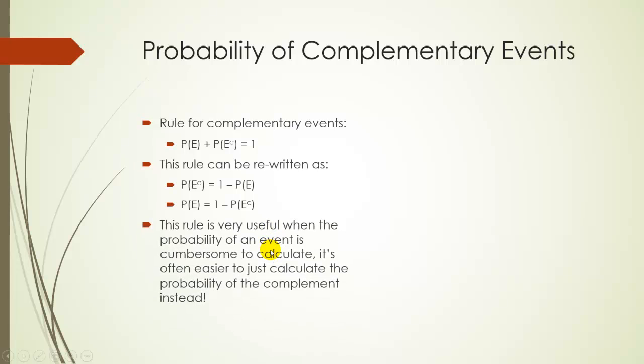Honestly, this is overcomplicating a very simple rule. You already know this rule. But where it's very useful is sometimes finding the probability of something is very complicated, but it might be very easy to find the probability of the complement of that event. So just calculate the probability of the complement, then subtract it from 1.